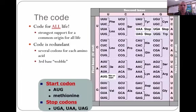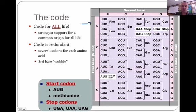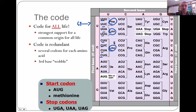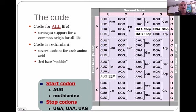Here's the actual genetic code we have today. As you can see, there are 64 different triplet codes. There are 20 amino acids. And all life has the exact same code — no matter if you're a tree, a dog, a cat, or a human, you have the exact same code.